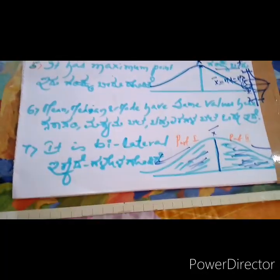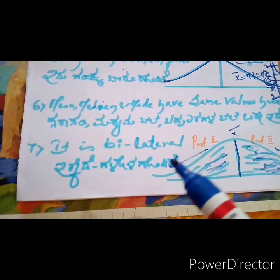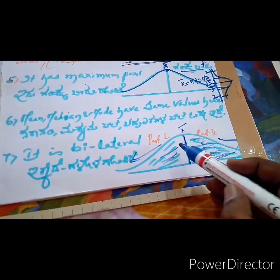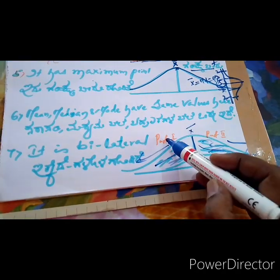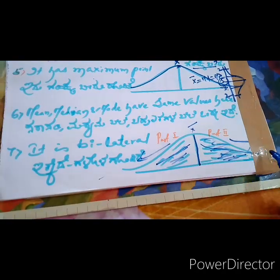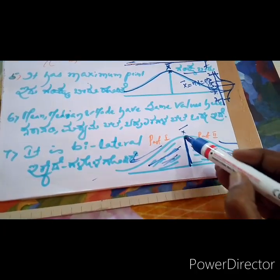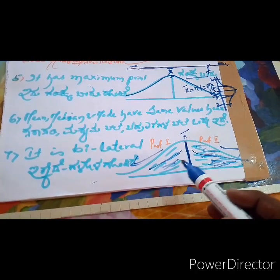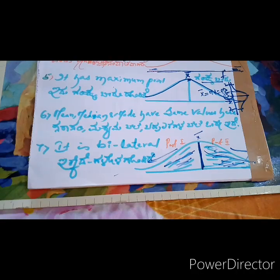Next point is, it is bilateral. Bilateral means from the middle point, half of the portion is left side and half of the portion is the right side. Part one is at left side, part two is at right side. From the midpoint, this graph is bilateral divided into 2. That's what we call NPC is bilateral.